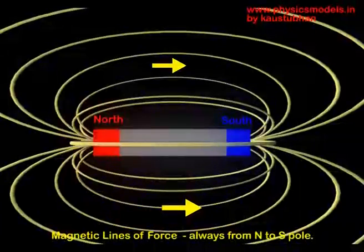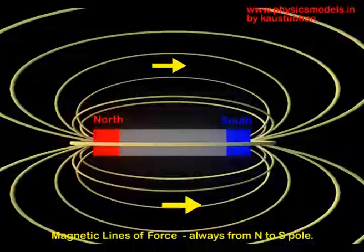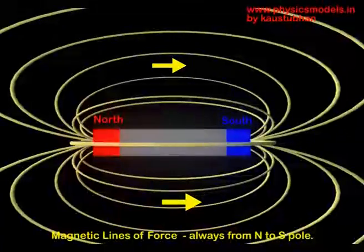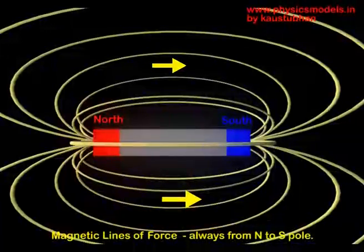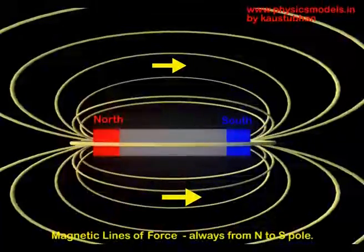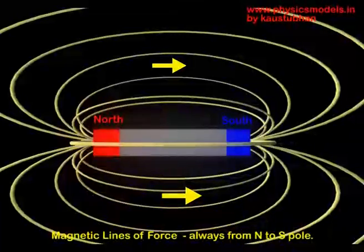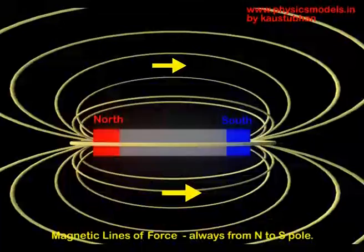We start with a bar magnet, which is a rectangular piece that gets divided into two halves. One end is a north pole, and the other end is a south pole. The red color is a general nomenclature for the north pole, and the blue color is a general nomenclature for the south pole.